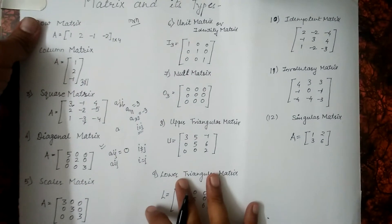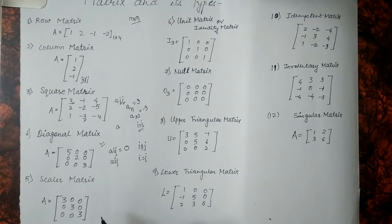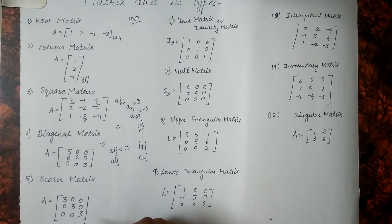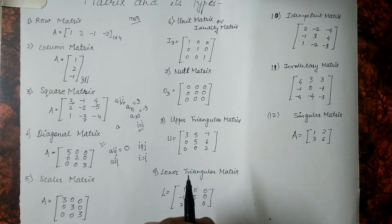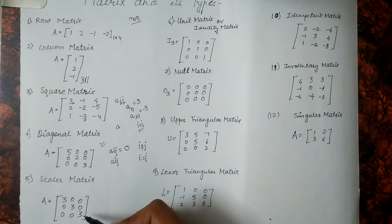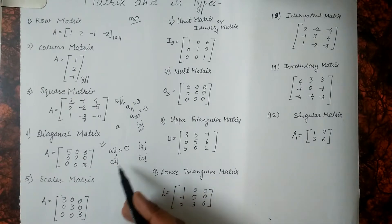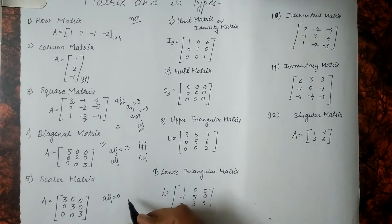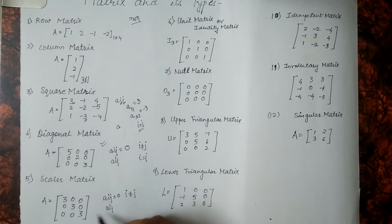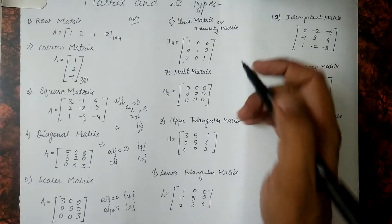The next matrix which we have is the scalar matrix. In this matrix we only have elements in the leading diagonal, but the elements are all the same. They can possess any value but the value should be the same in each position. The condition is: a of ij is equal to 0 if i does not equal to j, and a of ij is equal to 3 if i is equal to j.